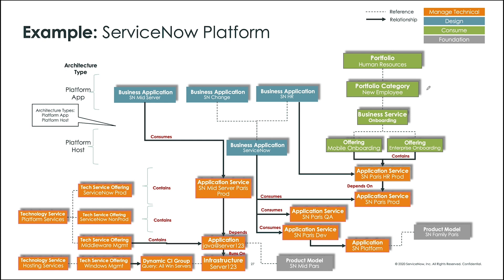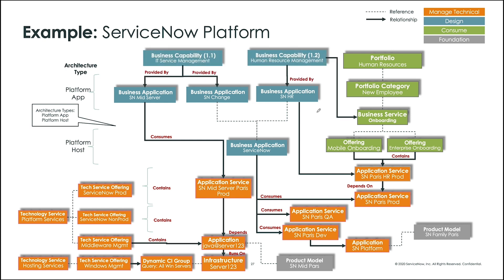Looking at the consume domain, the HR production application service on the platform is providing a very specific business service. The HR product offers two different styles of onboarding: one for mobile and one for the enterprise. This is all part of the onboarding business service, which is part of the new employee portfolio category under the human resource portfolio. The business capability of human resources is the sponsor for creating and managing this business application — I like to call this the funding vehicle, so HR would fund that particular onboarding application.